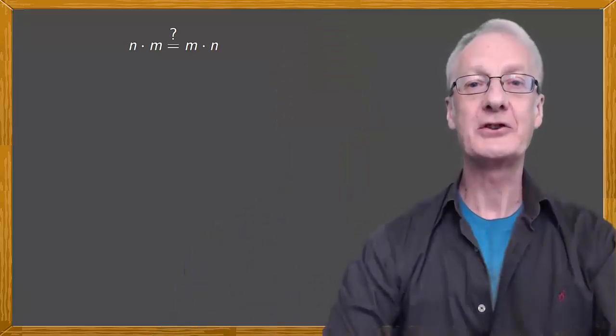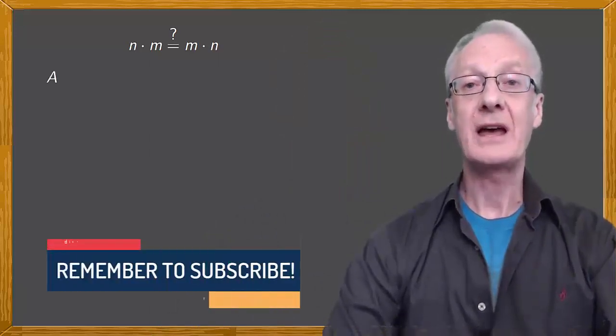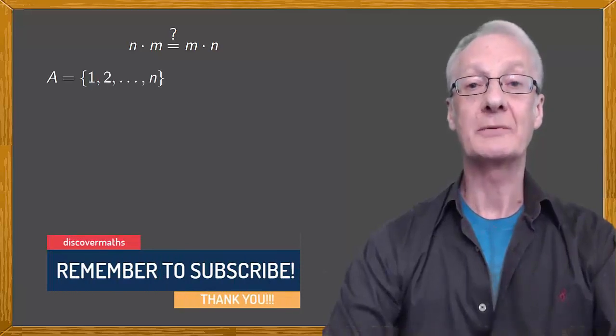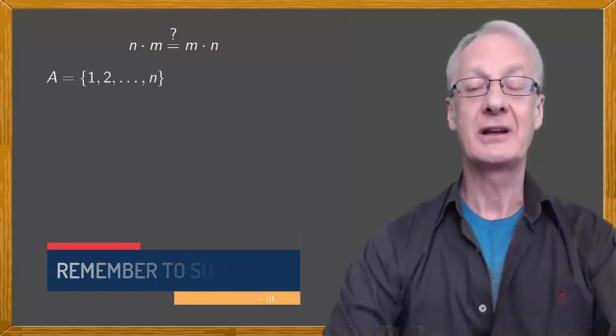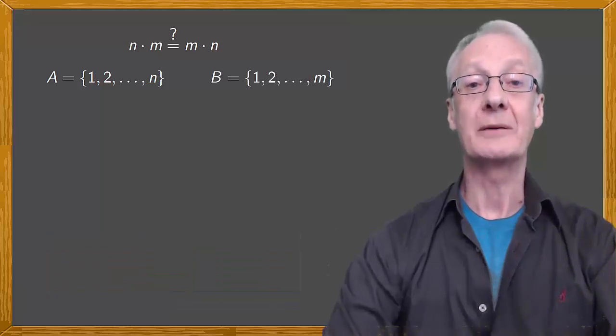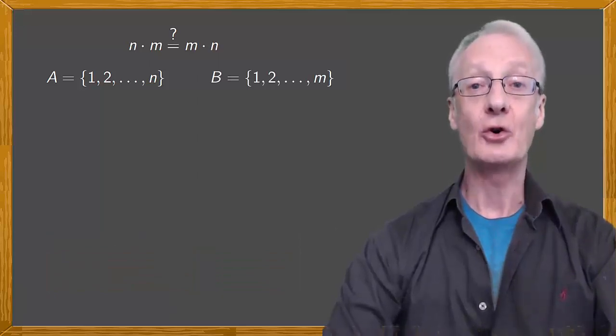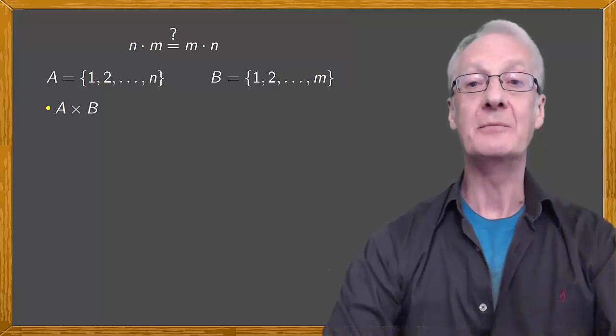We'll work with the Cartesian product and consider two sets A and B. A is the set 1, 2 all the way up to n, with n elements. And B is the set 1, 2 all the way up to m. As you know, the Cartesian product of A and B is the set of pairs in which the first element is from A and the second is from B.